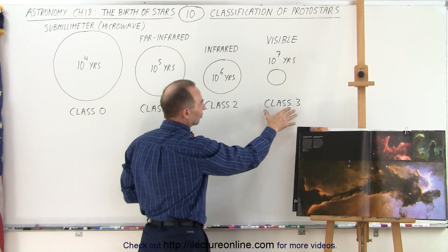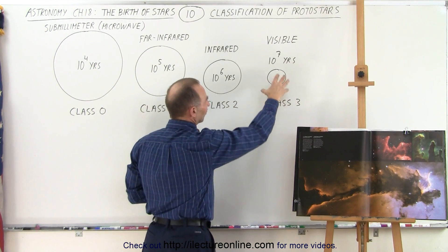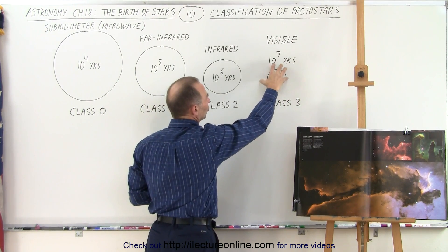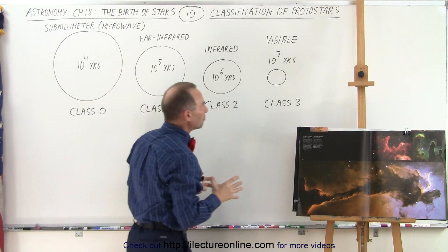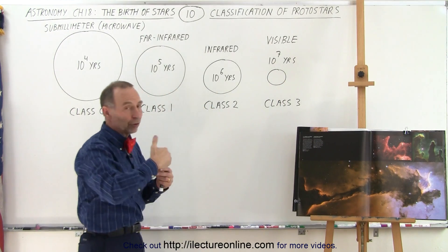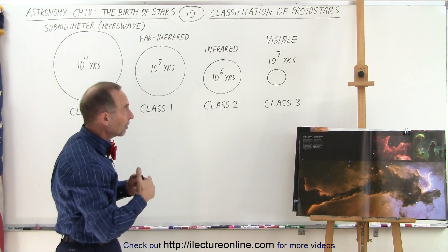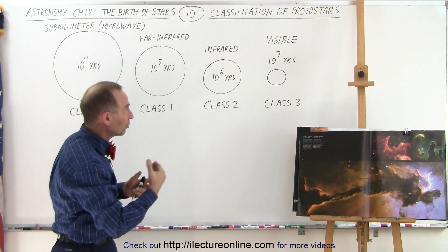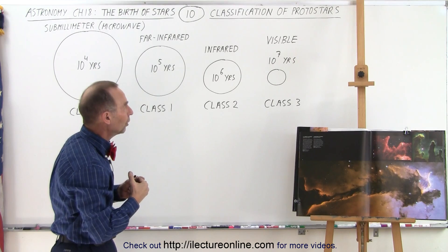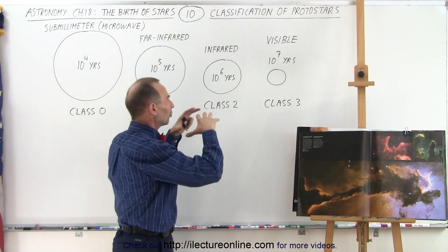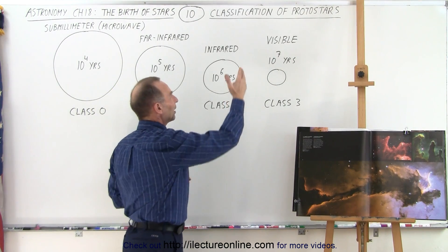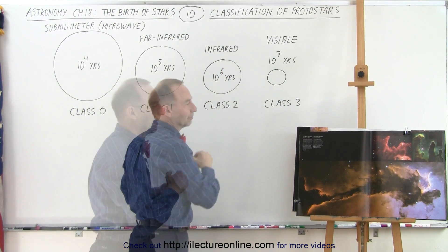Finally, it reaches class three, where we have a legitimate protostar with a temperature at the center of about one million degrees, slowly building up to a temperature of ten million degrees at the core. It begins to be so hot at the surface that...